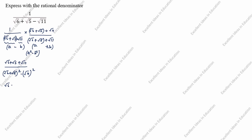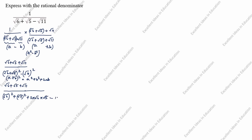Next, root 6 plus root 5 plus root 11 divided by this expression. We will split using the a plus b whole square formula. What is a plus b whole square? It is a square plus b square plus 2ab. We will split this as: a square is root 6 whole square, plus b square is root 5 whole square, plus 2 into root 6 into root 5, minus root 11 square which is 11.